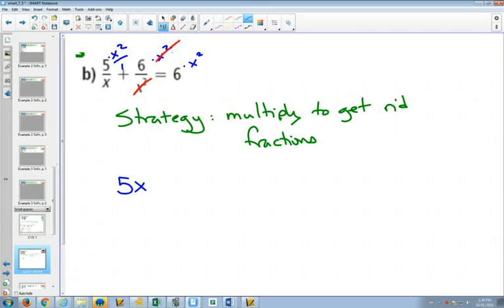So we have 5x in the first one. The second one, those x squared cancel out, so we'll just have plus x, plus 6. And on the other side of the equation, 6 times x squared will give us 6x squared. So by multiplying by the larger of the one, we got rid of all the fractions.